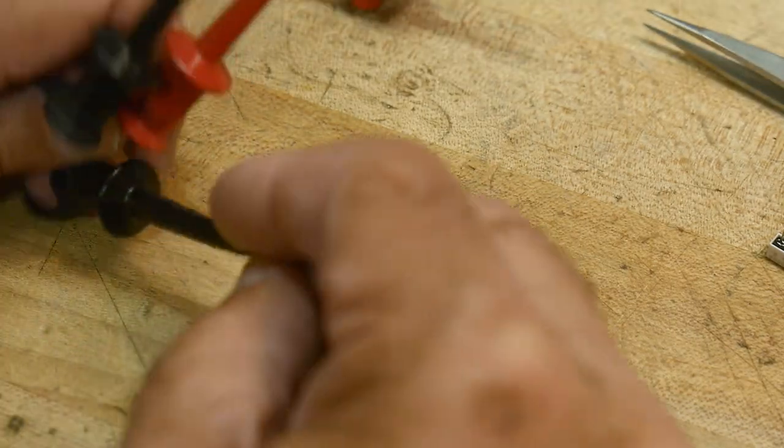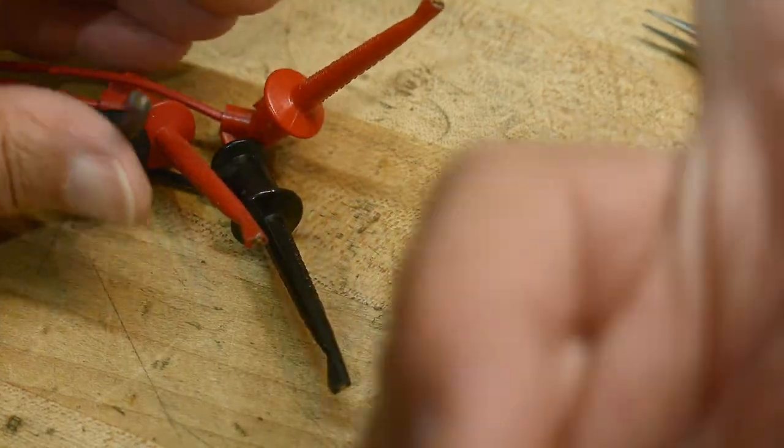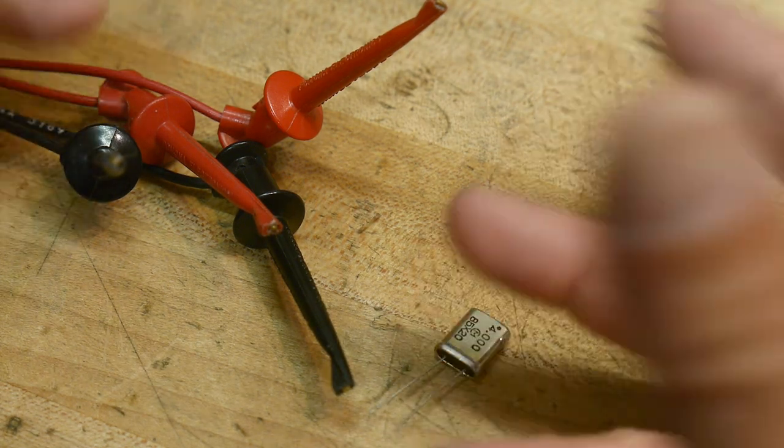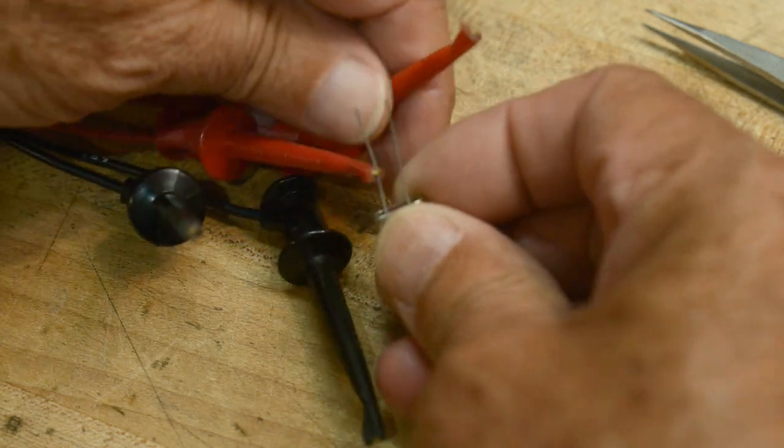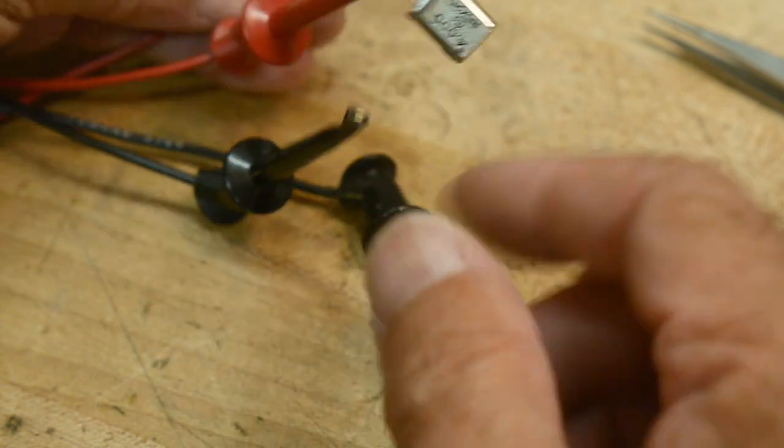You could use your nano VNA, you could put it in S21 mode, or you can use a spectrum analyzer with a tracking generator. That's what we're going to do. We are going to sweep this. We're just going to put our clip leads right across it, no need to hook up the ground. We'll just put it that way.